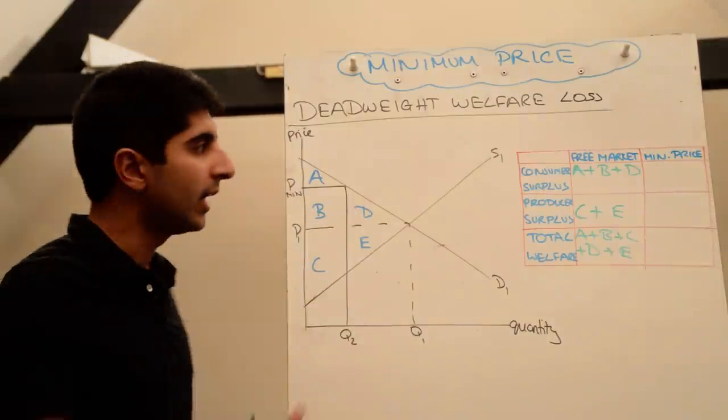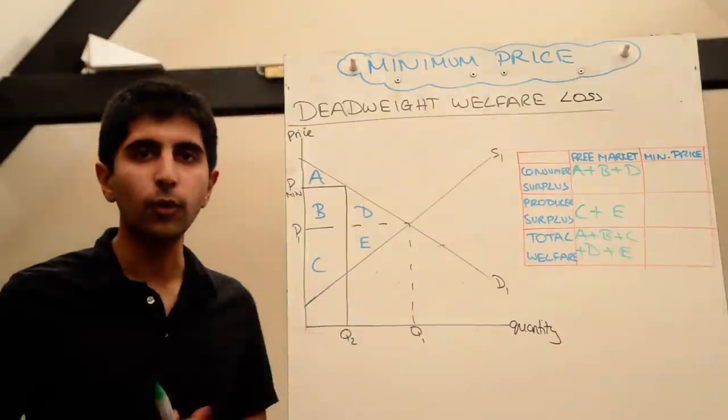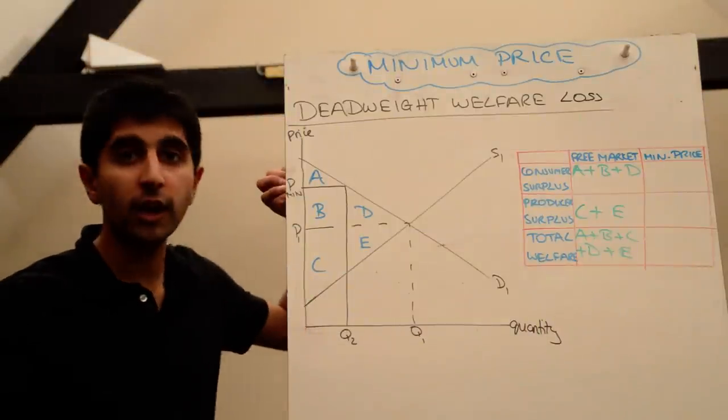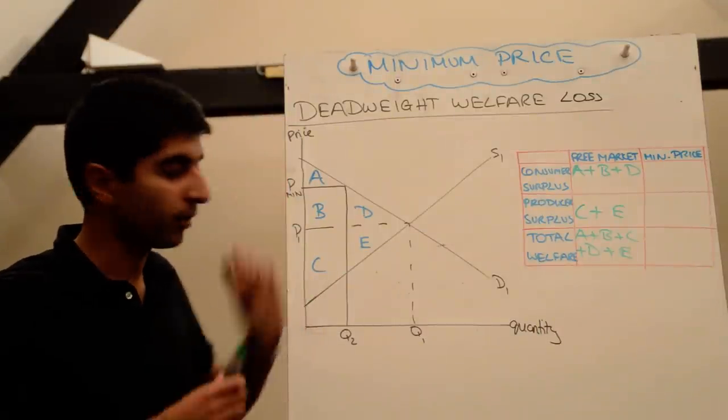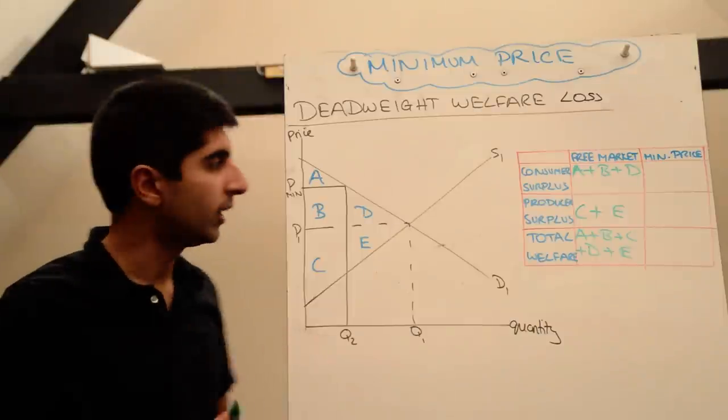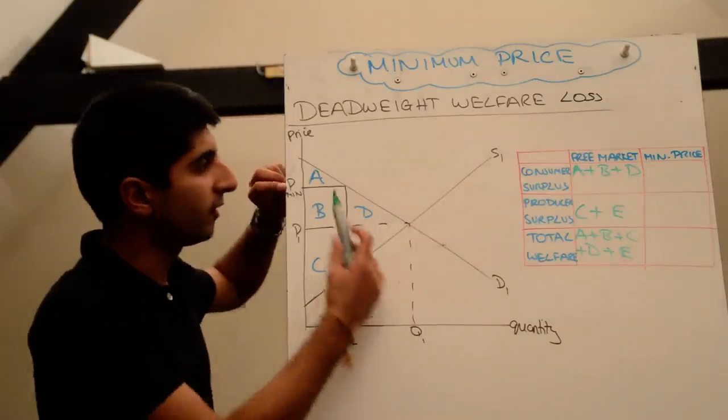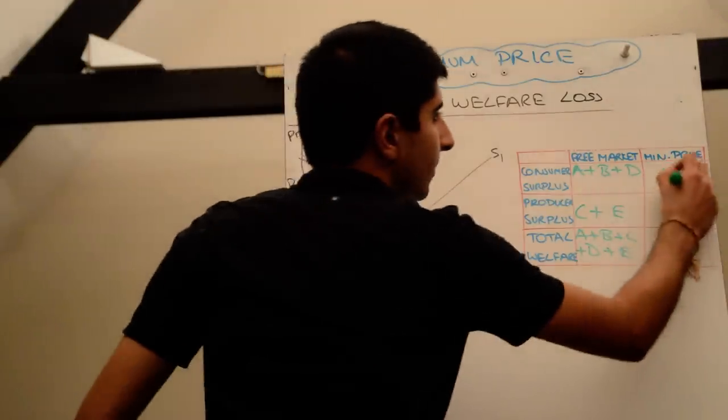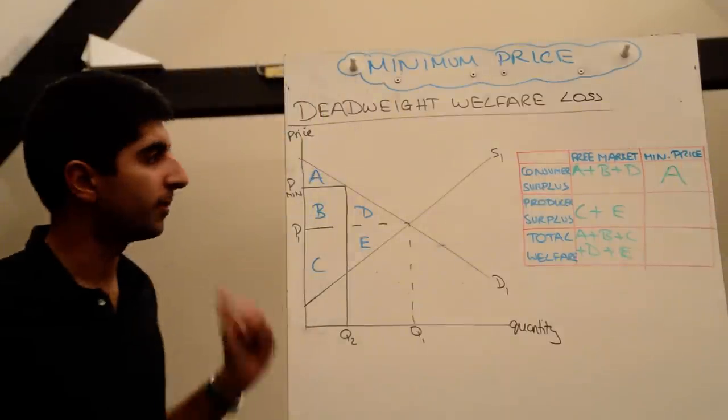Now with the minimum price let's go back and see the effects on welfare. So remember the price charged is at Pmin and at that minimum price Q2 is how much is sold. So at price Pmin the consumer surplus has now fallen to just A, the area above the new price and below the demand curve.